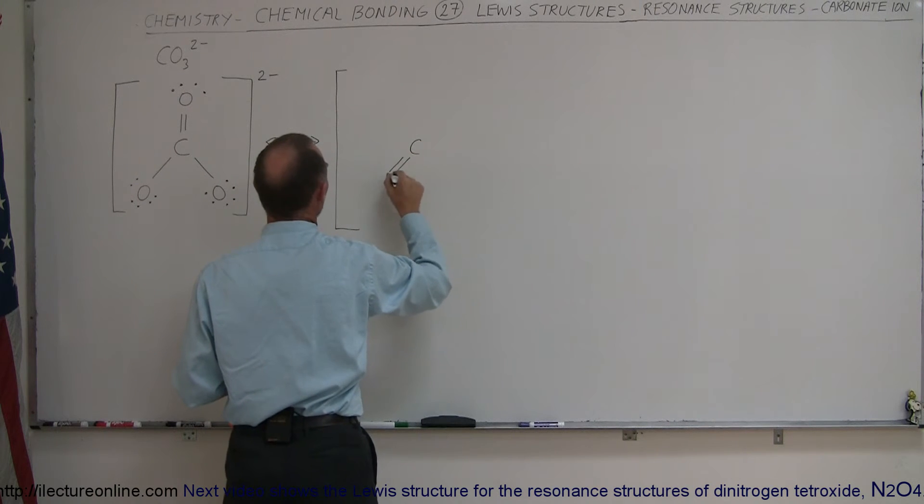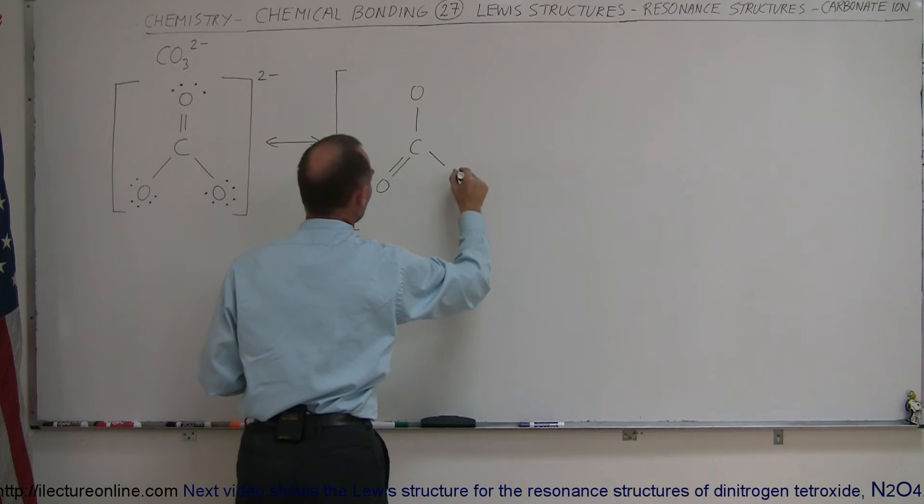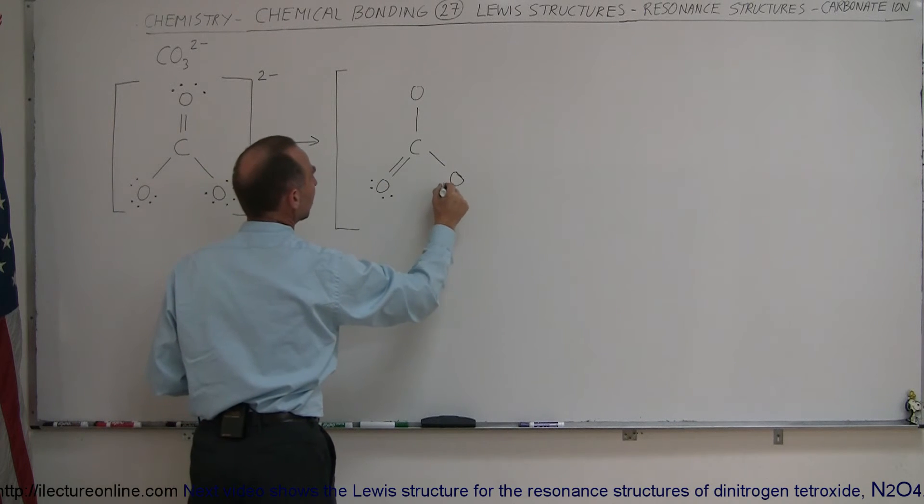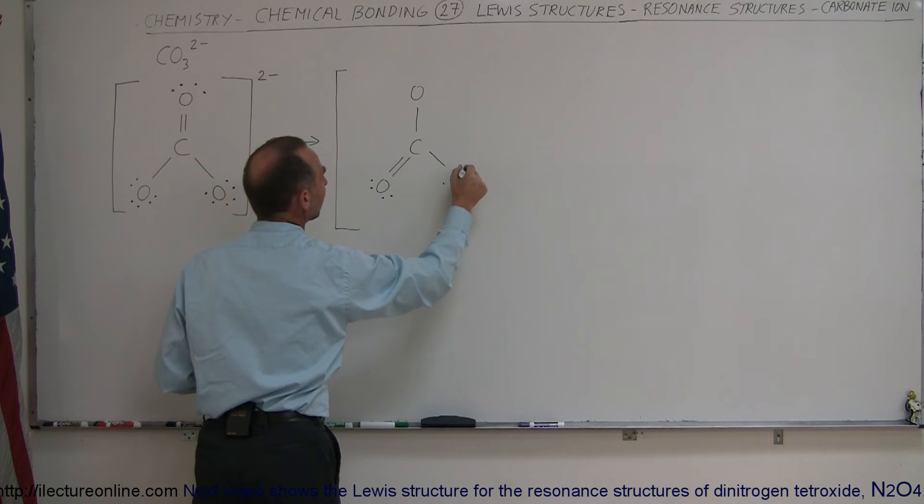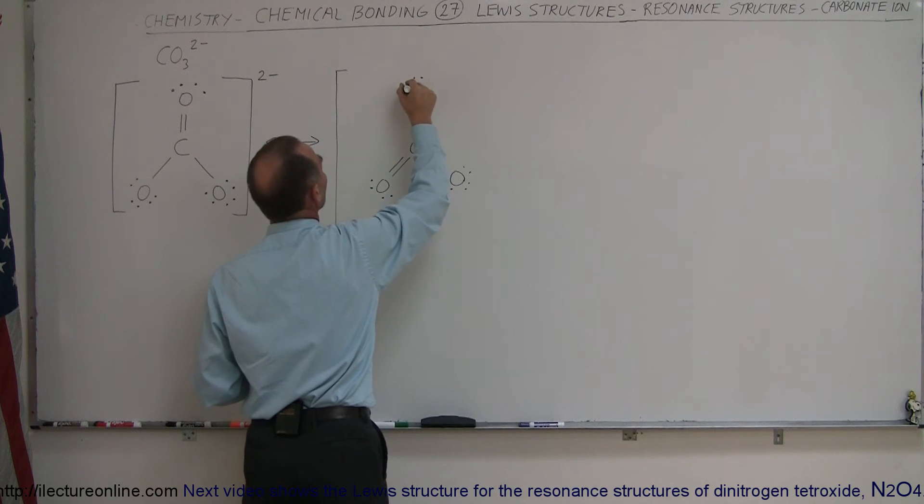We would put a double arrow right here and draw another possibility where the double bond, in this case, will be on this oxygen atom instead of on this one. Like so. And then we draw the corresponding valence electrons. There only will be four on this oxygen. There'll be six on this oxygen, and then there'll be six on this oxygen.